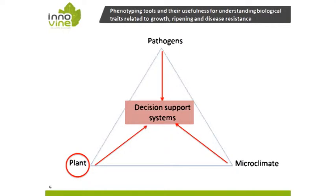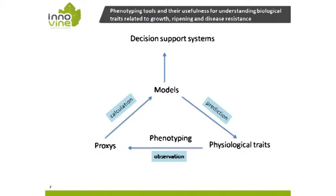Decision support tools are based on information collected on three parameters: the climate and microclimate when possible, the plant physiological status, and the dissemination and abundance of pathogens. To design these decision support systems, we rely on phenotyping, especially when we focus on the plant — and this is a point where phenotyping is very important.